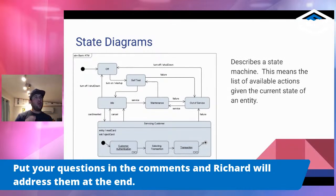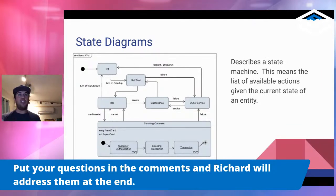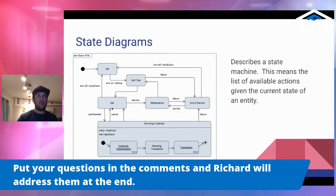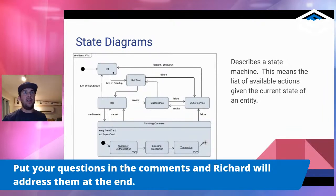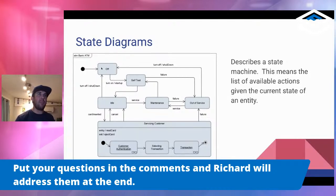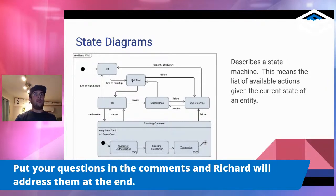Let's start with the state machine — a really cool diagram. A state machine describes the states that an entity can have and the list of available operations it could have in each state. In all notation systems you'll typically see the little dot and arrow meaning start. In this ATM example, when you start, the ATM is in the off state. From the off state, it can only go where the arrows point — the only available transition is to turn on. When it turns on, it enters the self-test state, which has two available state transitions.